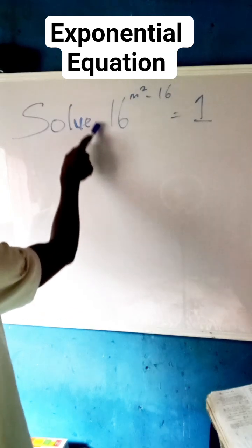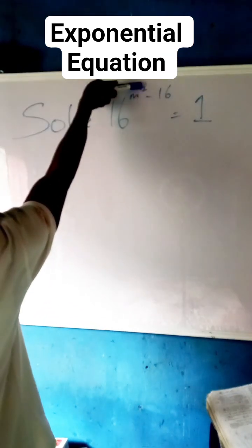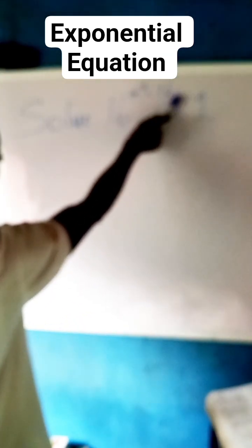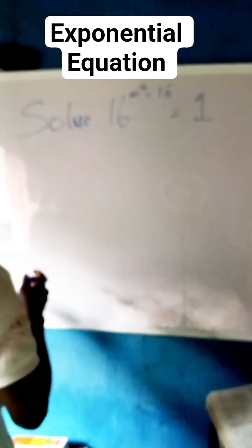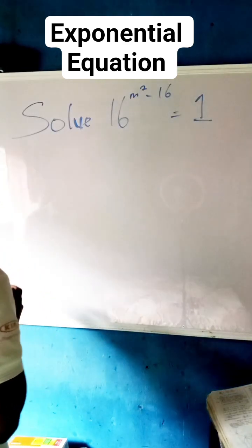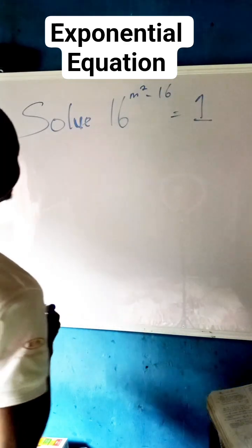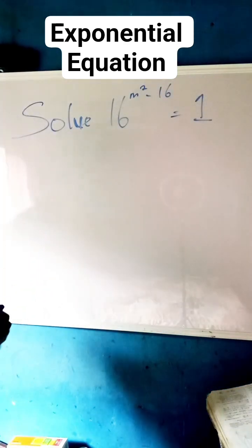Solve 16 raised to the power of m squared minus 16 equals 1. This question looks big, but it's going to be simpler as you watch this video to the end. Now what we are going to do first: we can see that here is 16 raised to the power of all of this, and we have in here as 1.